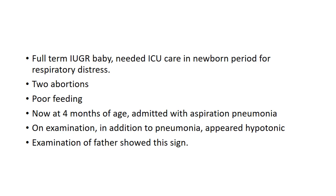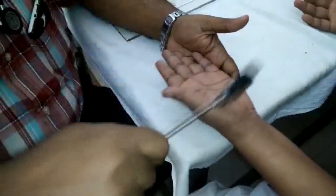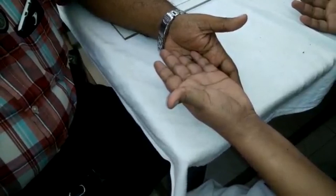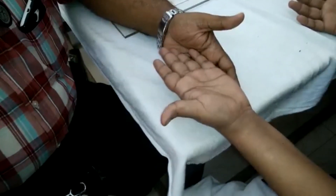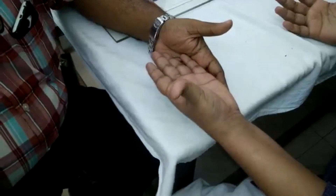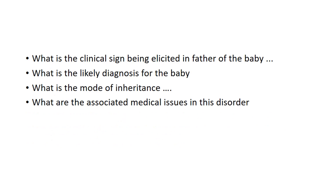On examination, in addition to pneumonia, the child appears markedly hypotonic, and examination of the father shows the following sign. What is this clinical sign being elicited in the father of the baby? What is the likely diagnosis of the baby? What is the mode of inheritance? And what are the associated medical issues in this disorder?